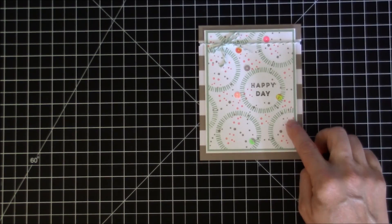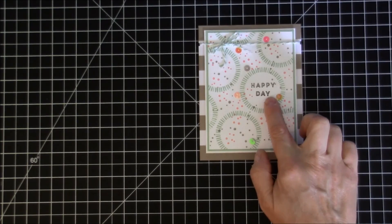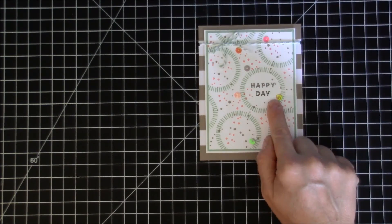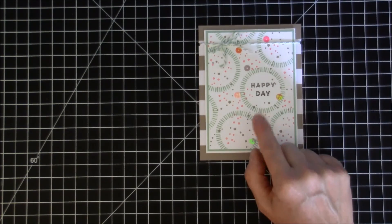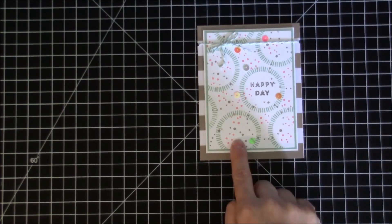I used the mint macaron, tip top taupe, early espresso for the sentiment so it would stand out a little bit more, and then I used the new in color flirty flamingo for more of the dots because that seemed to match the confetti really well.